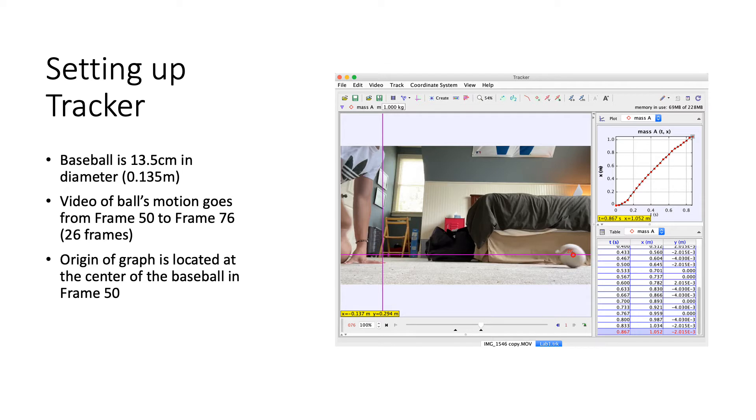So setting up Tracker, I first had to define the baseball's diameter, of which I set at 0.135 meters. The time frame of the ball's motion goes from frame 50 to frame 76, which is a total of 26 frames, and lasts a time of 0.867 seconds. And I placed the origin of the graph at the center of the baseball at the beginning of my video, which was frame 50.